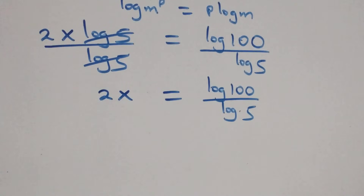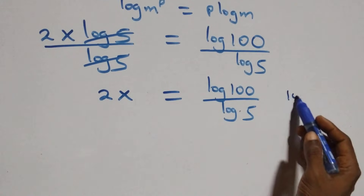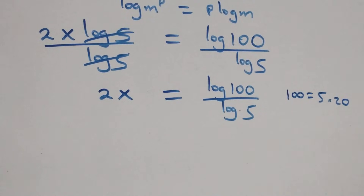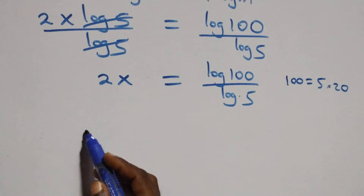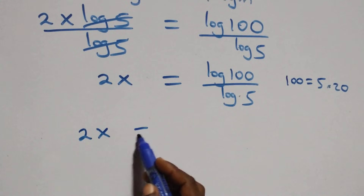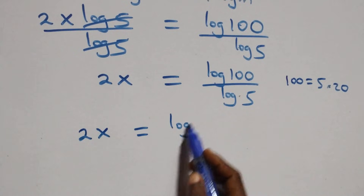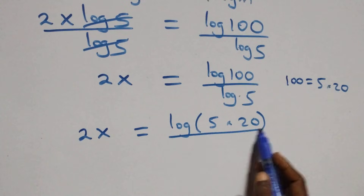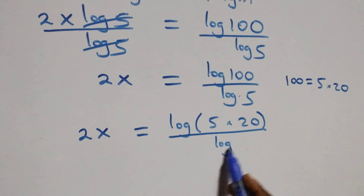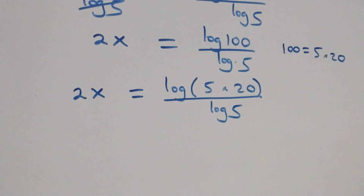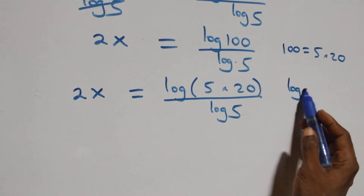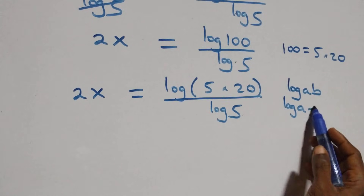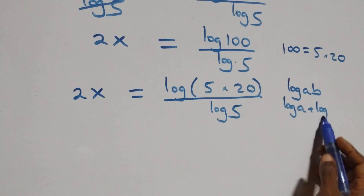From here we can rewrite 100 as 5 times 20. So we have 2x equals to log(5 times 20) over log 5. Then we apply the logarithm product rule: log(a times b) is the same thing as log a plus log b.